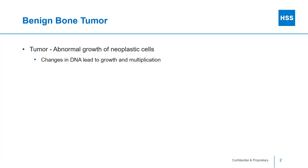Let's start with some definitions. A tumor is an abnormal growth of neoplastic cells. Neoplastic means new — new cells that have changes in their underlying DNA, which leads to their growth and multiplication into a mass known as a tumor.